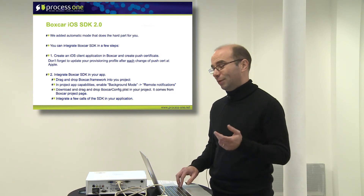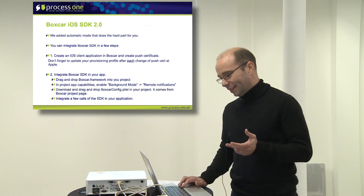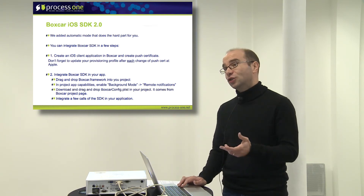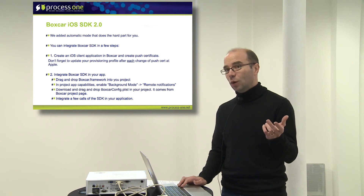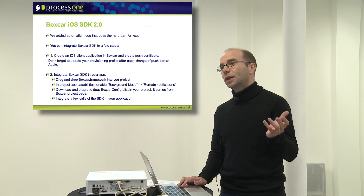Once you have done that and set up everything, don't forget to download your provisioning profile after setting up the push, because otherwise the push won't work — the SDK will tell you that you need to have a valid provisioning profile. Once you have done that, you can just integrate the SDK into your mobile application. In the new version we're building, we are going to an automatic mode: you just take a framework, drag and drop it into your project, enable the push capability in your project, drag and drop a Boxcar config file from our platform where all the parameters are given for you, drag and drop that, build, and you have one or two calls to integrate to register — and you're done.